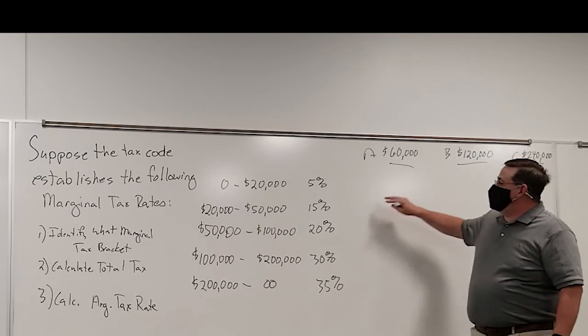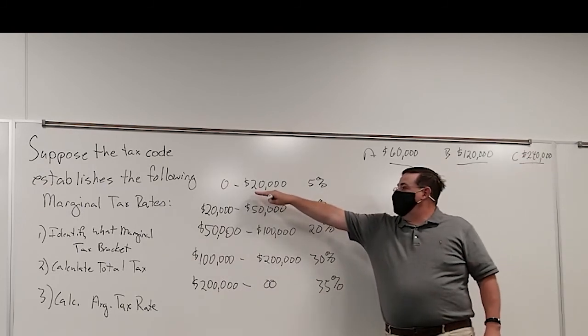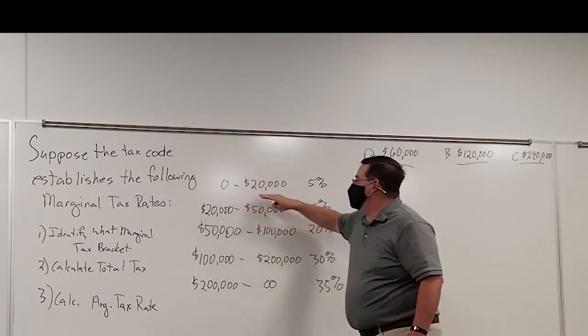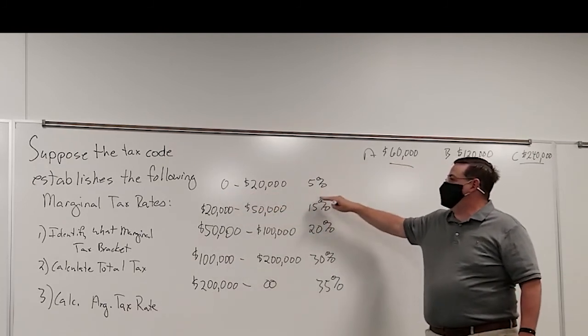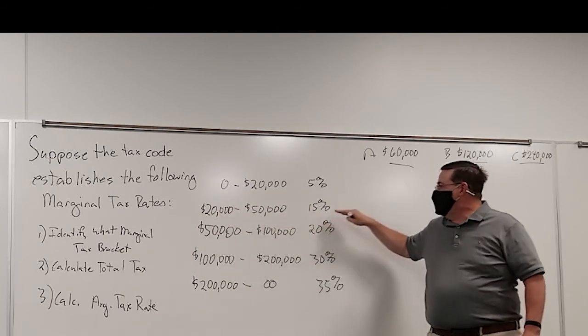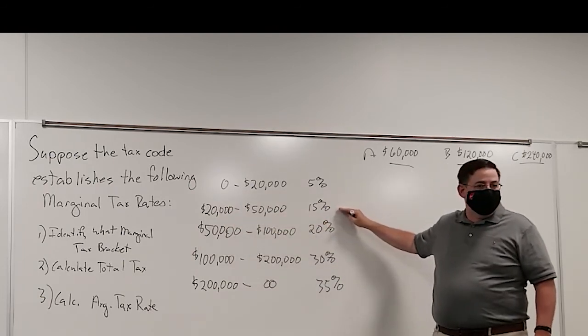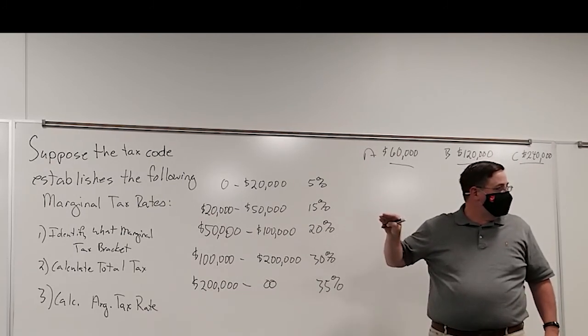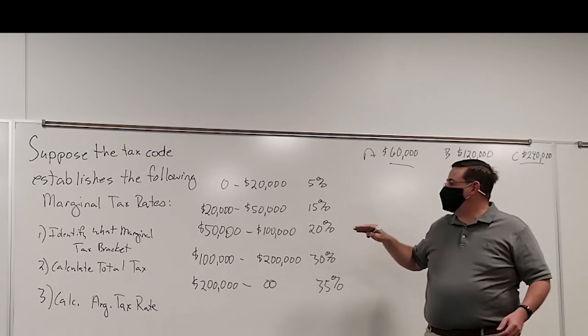Instead, for each family, we're going to calculate the first part of their tax, the amount of money that they earn between $0 and $20,000 at 5%, and then the money that they earn between $20,000 and $50,000, we're going to tax at 15%. Are you with me? Does that make sense?